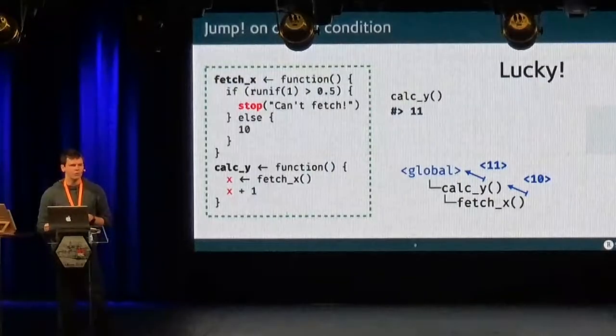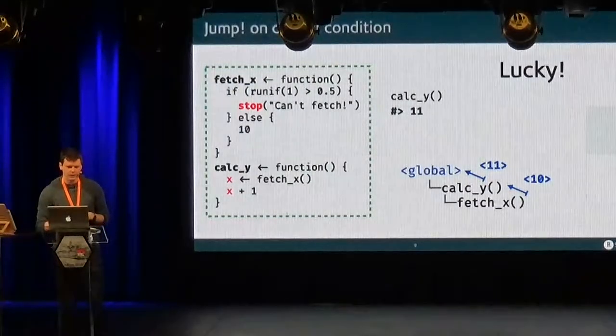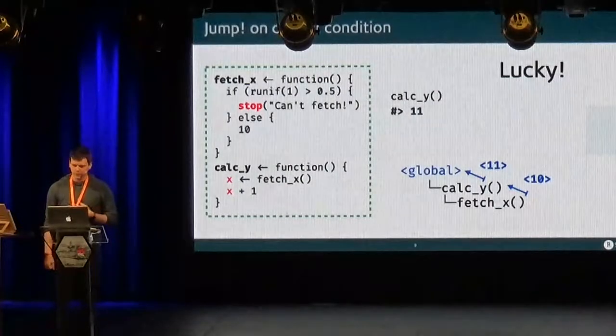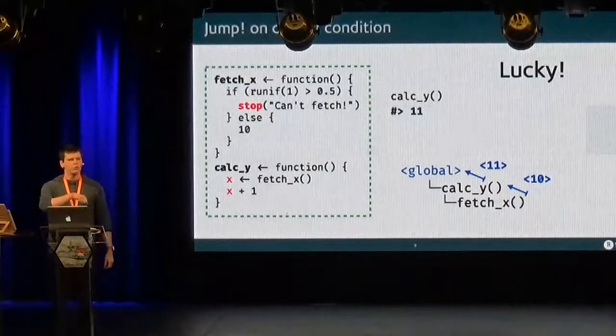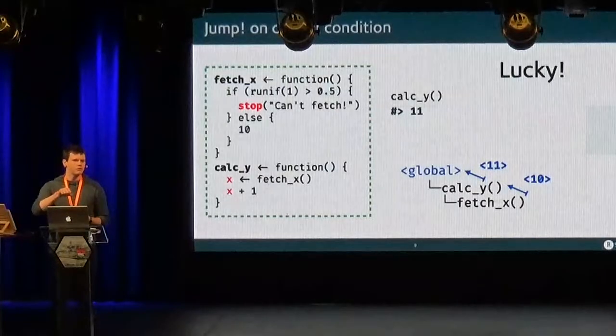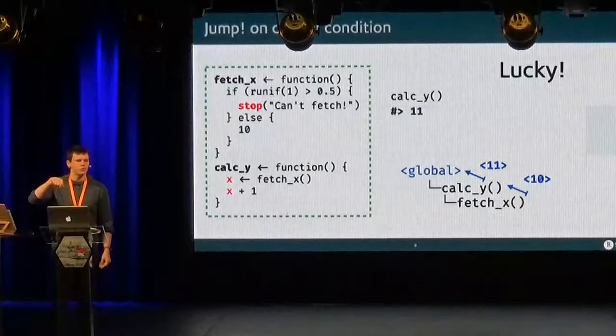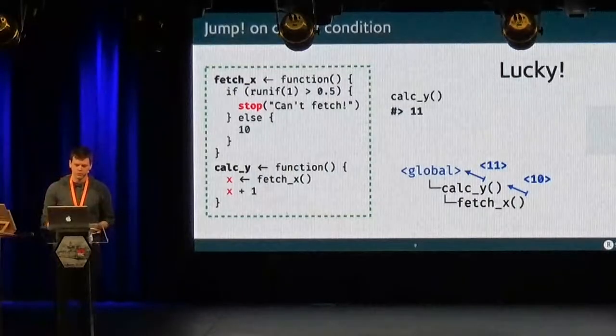And so if you are lucky and there was no error, we get this kind of call stack, like in the diagram there, where you start from the global environment, you call calcY, calcY calls fetchX, then fetchX returns ten, and then you add one to that and you return eleven and you get your result.